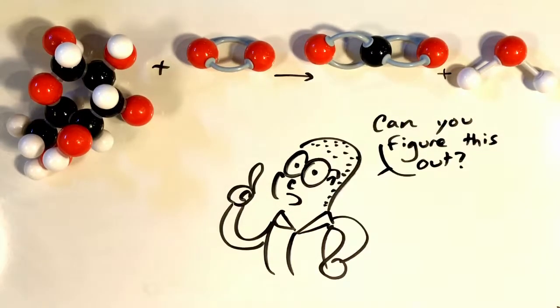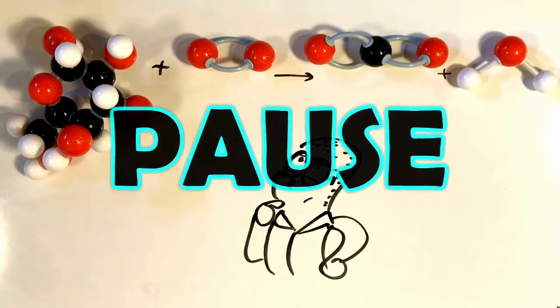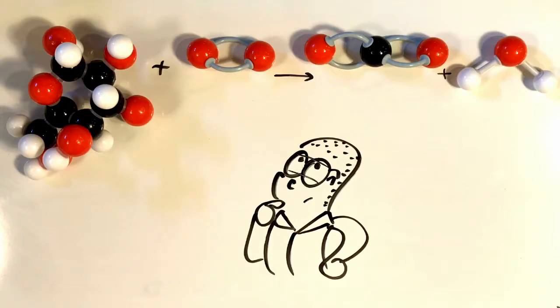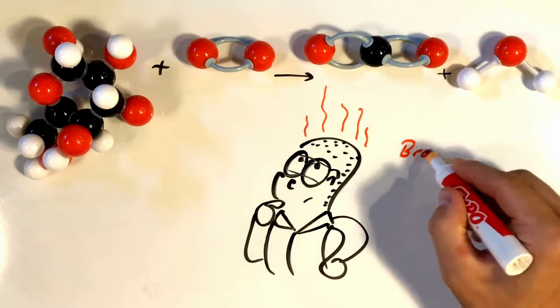What would you have to do to the numbers of molecules in the reactants and in the products to fix this chemical reaction? Go ahead and pause the video, grab a pencil and a piece of paper, and see if you can figure this out.